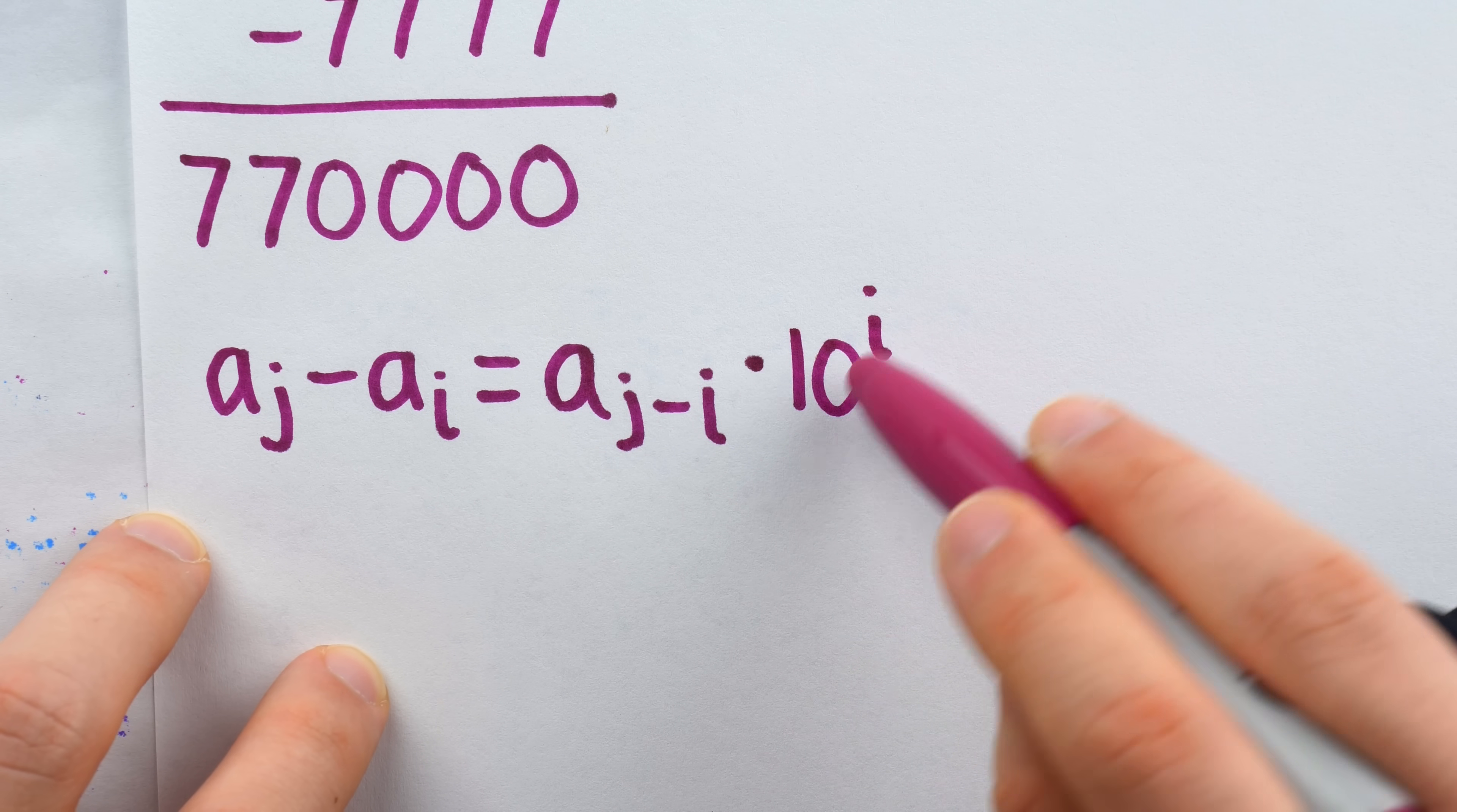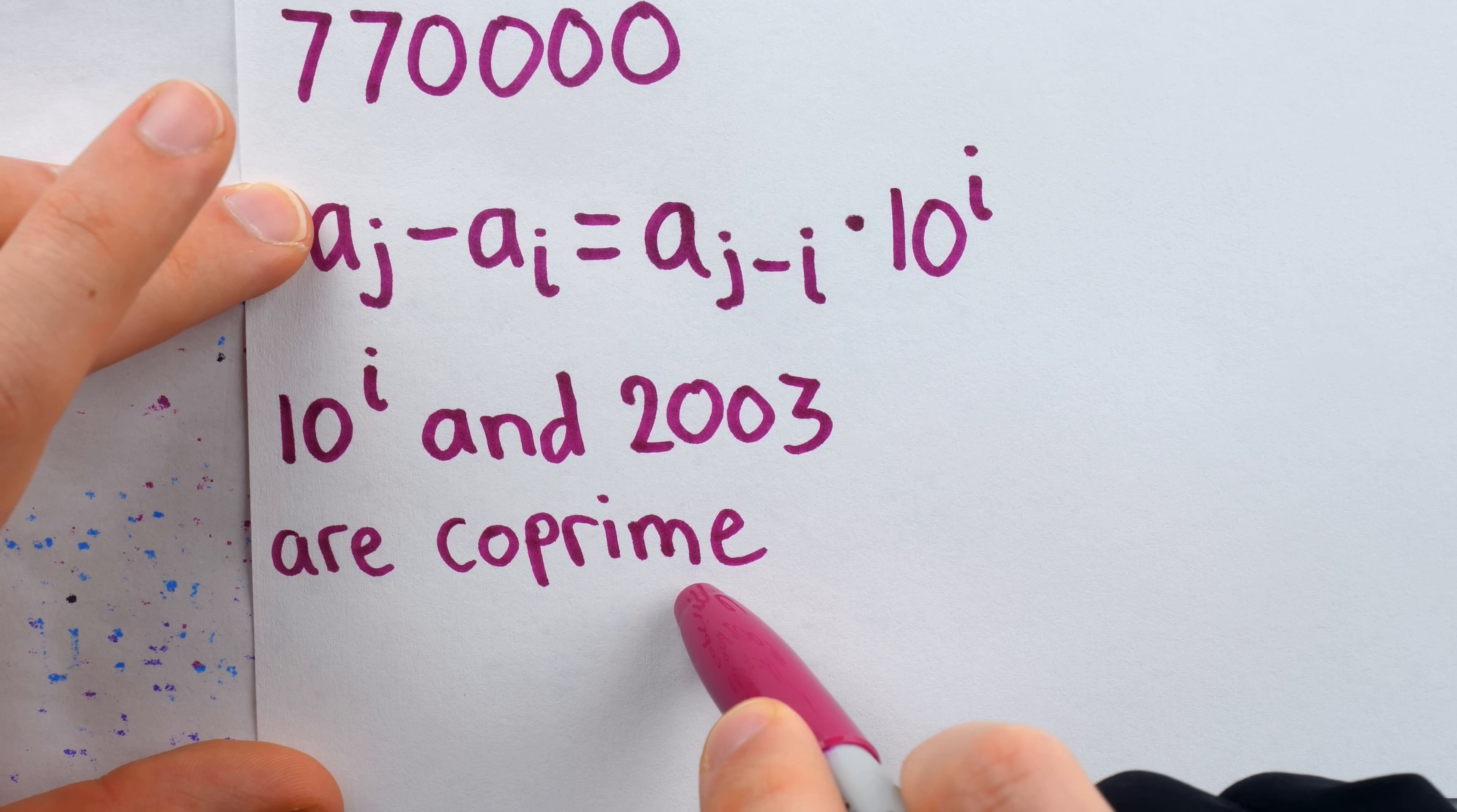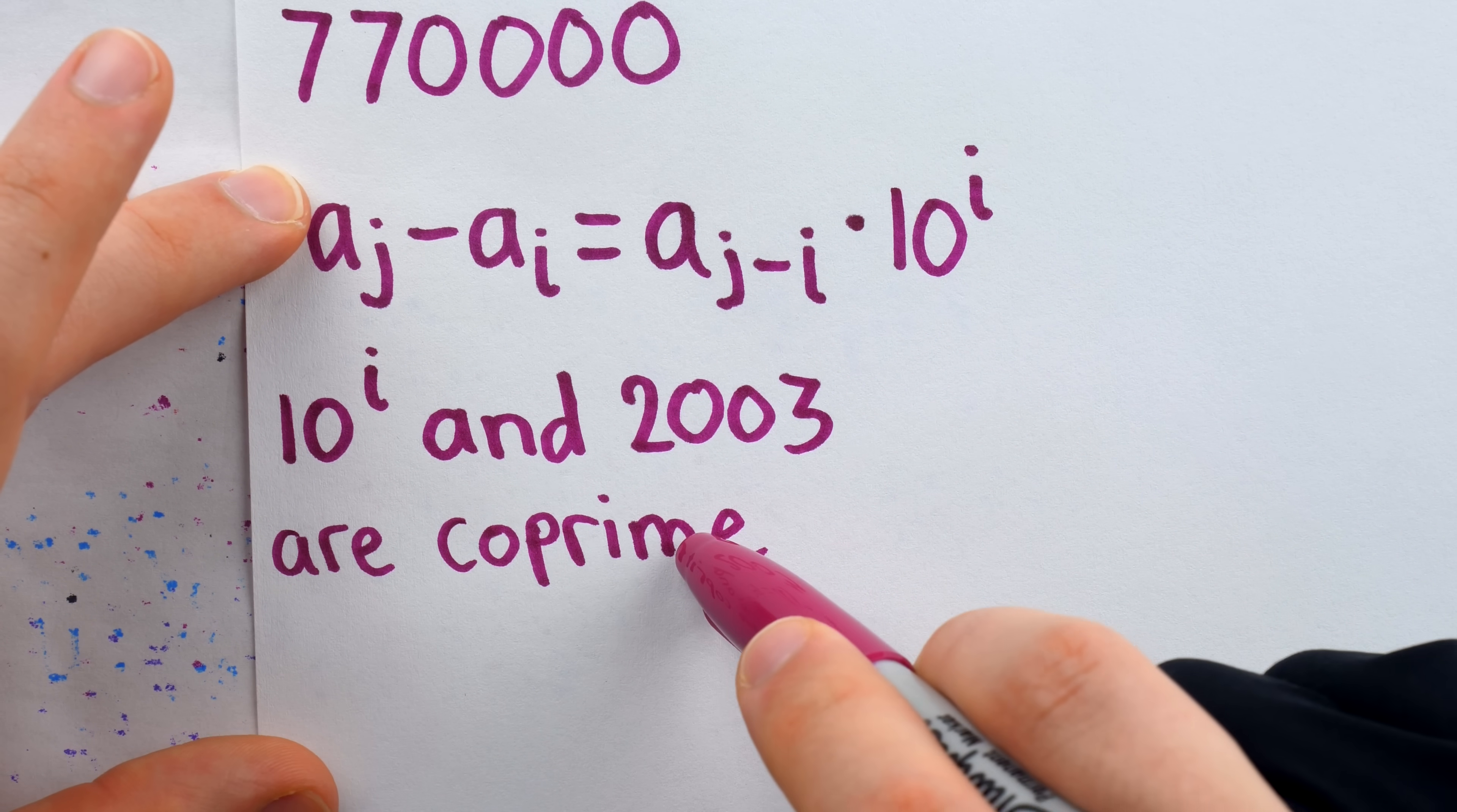But we certainly know that ten to the i isn't divisible by 2003, because ten and 2003 are relatively prime. They are relatively prime, or we sometimes call it coprime. This means they have no common prime factors. We know that because the only prime factors of ten to the i are two and five, and 2003 is neither even nor a multiple of five. So they're certainly coprime.